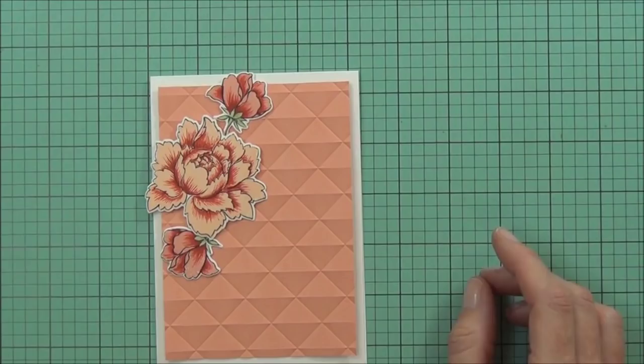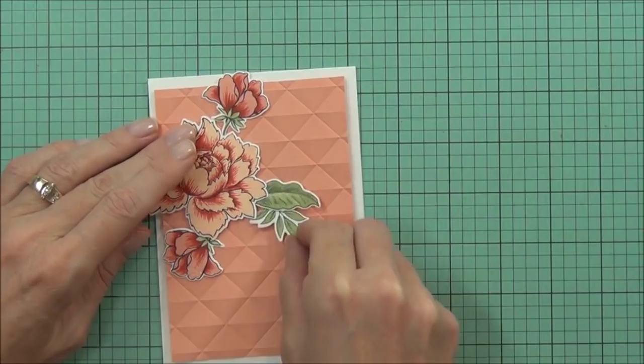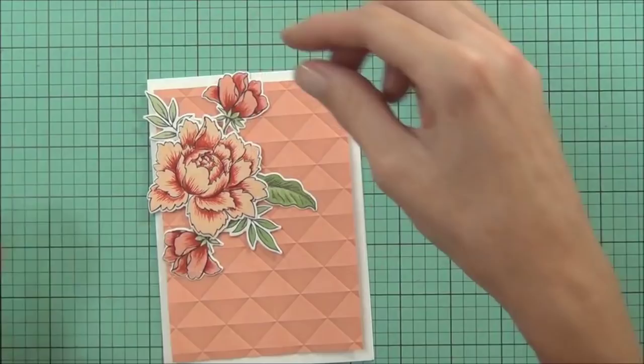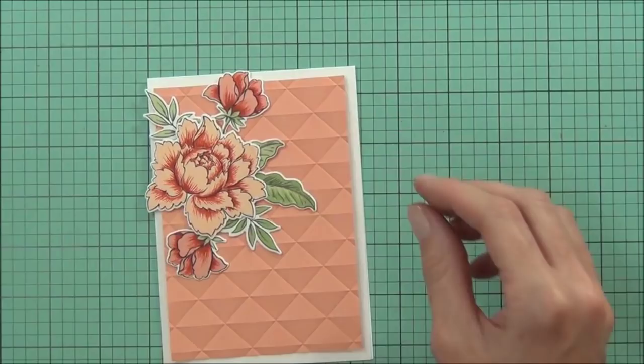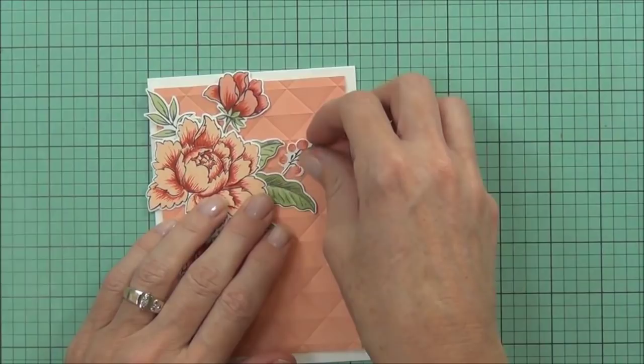I also die cut them with the matching dies. Here I'm working out my basic bouquet layout. I love the fact that there's this little white border around the flowers and leaves—it means I can use this dark background and it will stand out. Having the white border around the edge of the card as well brings it all together.